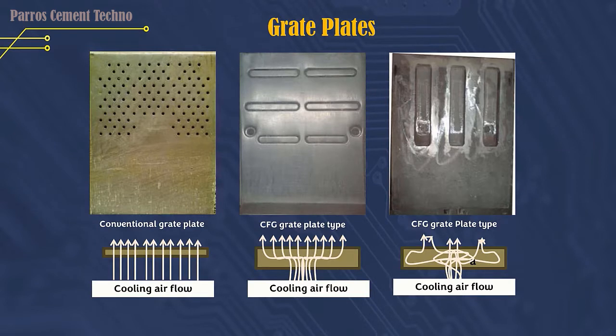This is an example of a conventional grate plate type and a CFG type grate plate. The physical difference is that the conventional grate plate is thin with small holes 6 mm in diameter that penetrate directly into the surface of the plate, while the CFG type plate is thicker and has a cavity inside to circulate cooling air. For conventional grate plates, cooling air flows directly to the surface. For CFG grate plates, there are several types — as shown in this picture — where cooling air flows through the cavity of the plate to the surface.